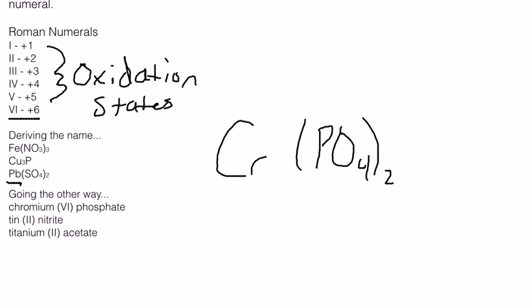And so now we have a neutral compound, chromium parentheses phosphate with a two outside of the parentheses. The reason why we put the parentheses out there is because this just wouldn't look clean if we were to write it as PO4 2. When we put the parentheses around the molecule, that helps us clean it up and know that there are two molecules of phosphate there.